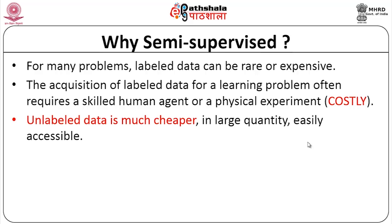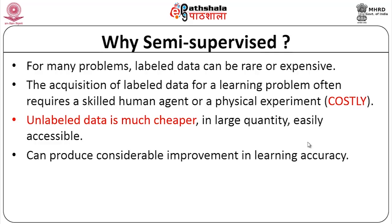Unlabeled data is much cheaper because it exists in large quantity — finding a large corpus of text is not a problem, but labeling it is. This unlabeled data is easily accessible, and by using a combination of labeled and unlabeled data, we can produce considerable improvement in learning accuracy. Cannot we just use unsupervised learning? Supervised learning puts you rigidly into a training form; unsupervised tries to find patterns within the data; but in semi-supervised, you focus the unsupervised approach in the right direction.